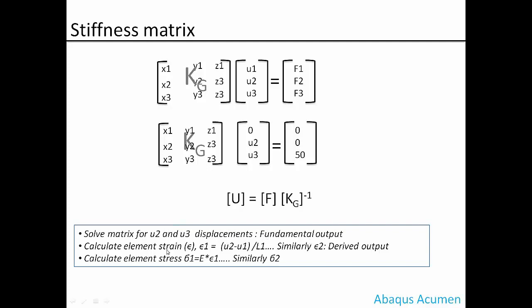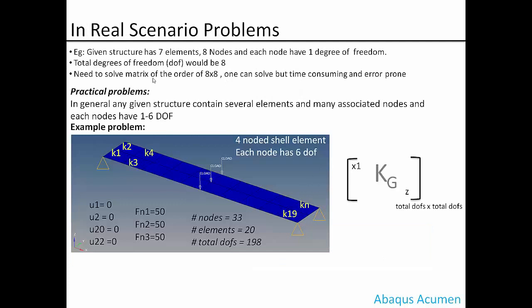When we solve this matrix, we'll get output: u2 and u3 displacement. These are called fundamental outputs. Using this u2 and u3 displacement at node 2 and node 3, we can calculate element strain for element 1 and similarly element strain for second element, element 2. These are called derived output because you're deriving these outputs by knowing the fundamental output, the displacement at each node. Finally we need to calculate element stress, which is what we're always interested to see. Element stress is calculated: sigma 1 equals E times epsilon 1. Similarly we can calculate sigma 2, stress at element 2.